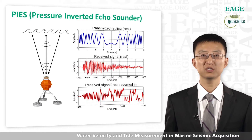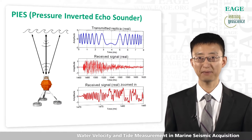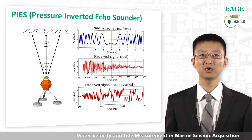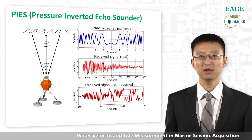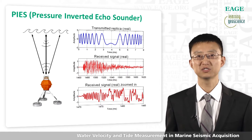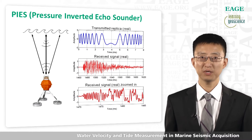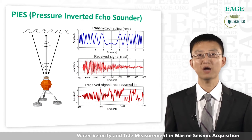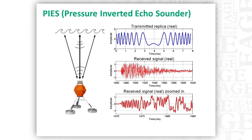The top right plot shows the transmitted waveform by PIES, and the middle plot shows the recorded waveform. We can see it's strongly distorted because of the undulations of the sea surface. Fortunately, for the purpose of PIES, the first arrival part of the recorded waveform is relatively clean. Since the first arrival corresponds to the shortest ray path in the vertical direction, the vertical travel time can be precisely measured by cross-correlation of the transmitted waveform and the recorded waveform.